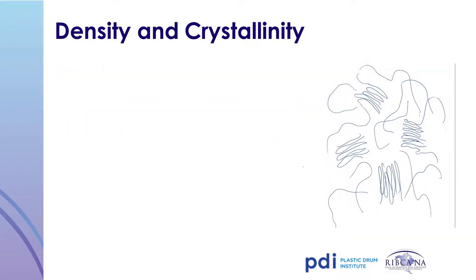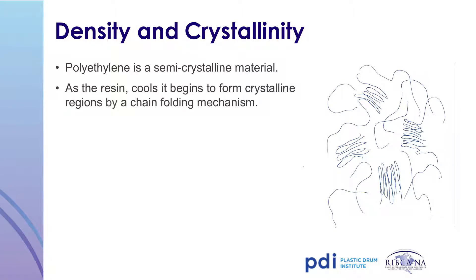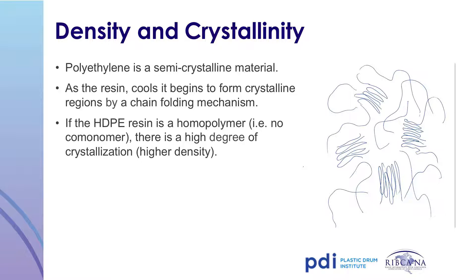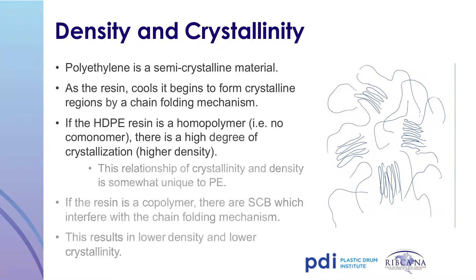Next, we'll discuss the relationship between density and crystallinity. Polyethylene is a semi-crystalline material, meaning the resin contains both amorphous non-crystalline content and crystalline content. Amorphous content can be compared to spaghetti noodles with long open chains, while crystalline content areas are more condensed. When you heat polyethylene, the crystalline areas break apart, allowing the polymer to flow. As it cools, the crystalline areas reform. Homopolymers exhibit a high degree of crystallization and higher density. As comonomer content increases, the resin exhibits more short-chain branching and subsequently lower crystallinity and density.